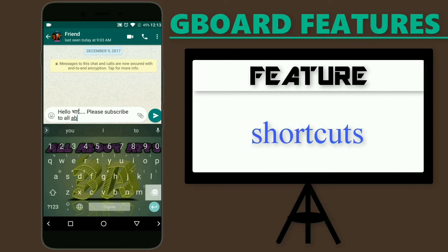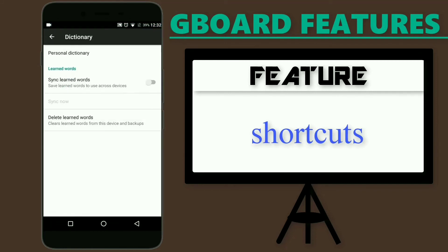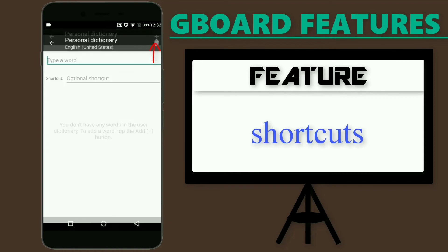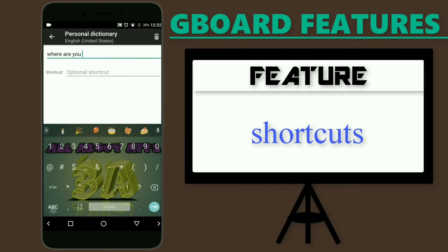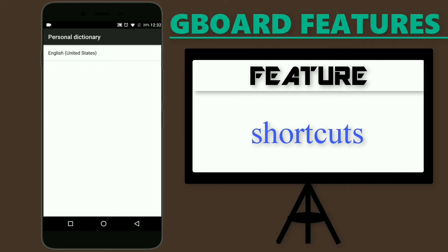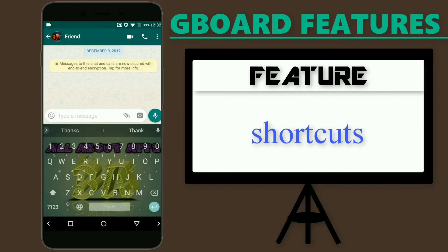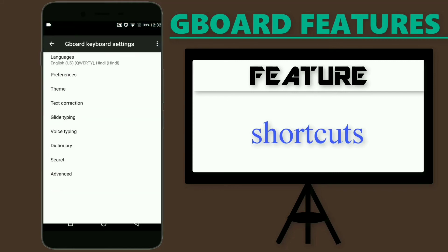You can also add a shortcut for any word or sentence you use frequently. For example, instead of typing 'where are you,' you can just type 'w are you.' Select the personal dictionary option, tap on the plus button at the top right, and type in your shortcut. Once you are done, don't forget to sync this shortcut to your account so that when you format your device, you won't lose them.